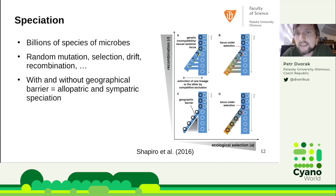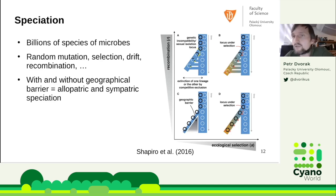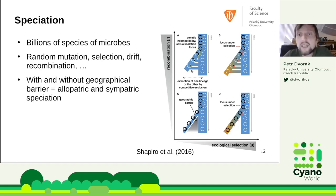I want to explain four scenarios we could observe. On the x-axis is growing ecological selection; on the y-axis is recombination. In scenario A, there is genetic incompatibility — a sexual isolation locus with restricted gene flow but no selection. In scenario B, there is very significant selection at some locus but still a lot of recombination. In scenario C, we see a geographical barrier with no recombination and no selection. Scenario D involves a lot of selection at some locus combined with geographical differentiation.